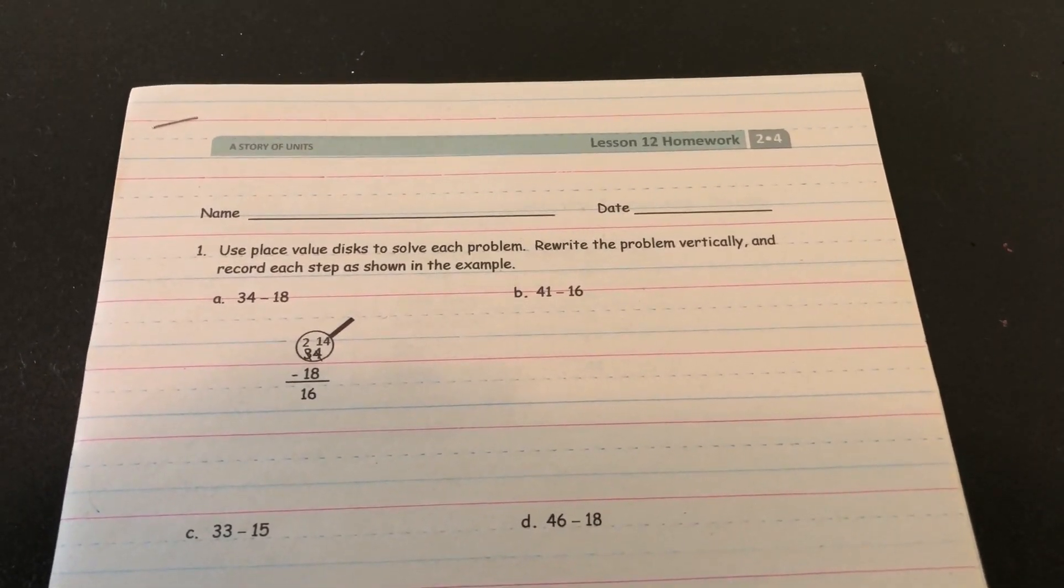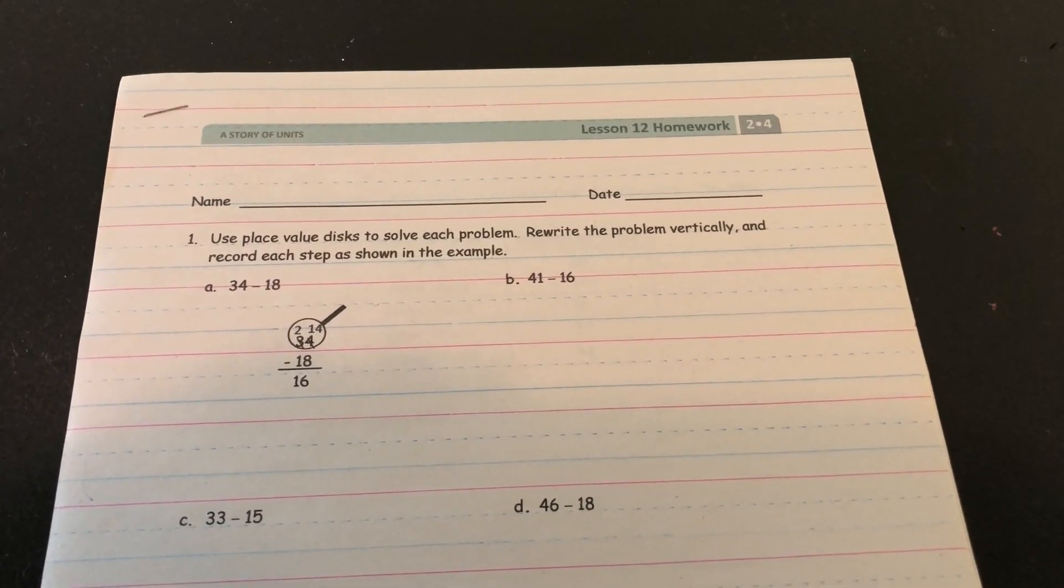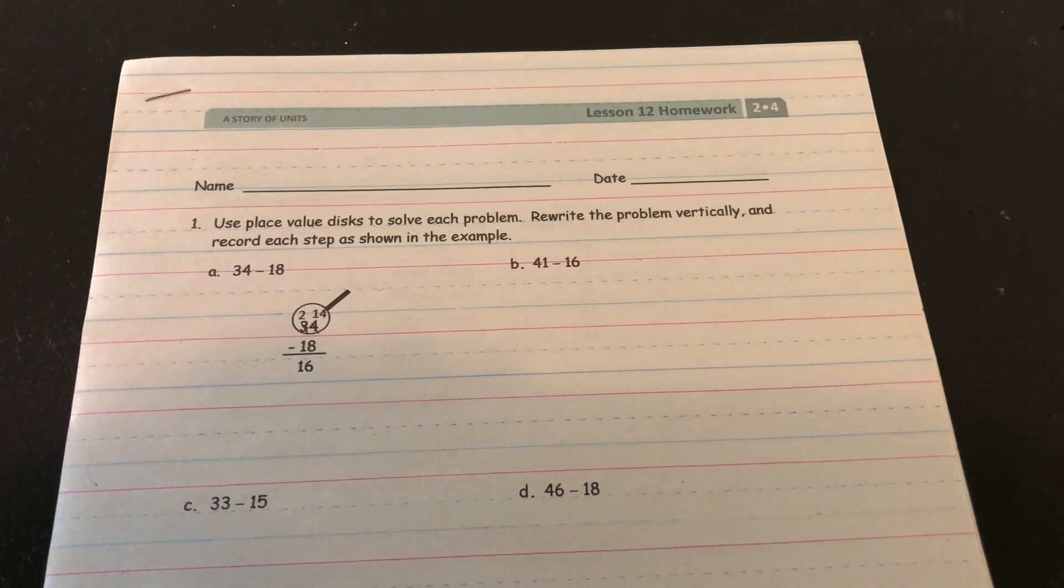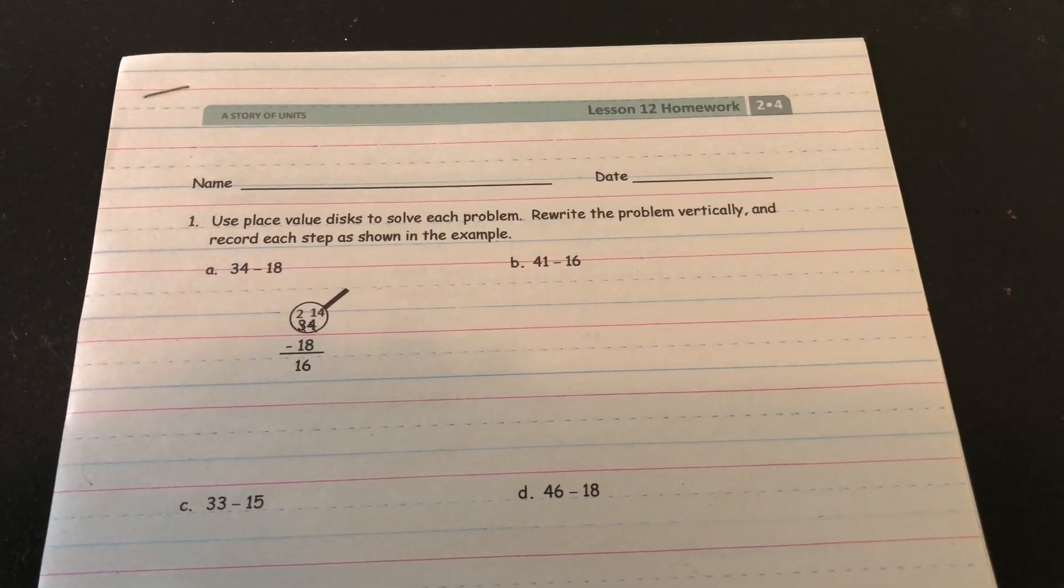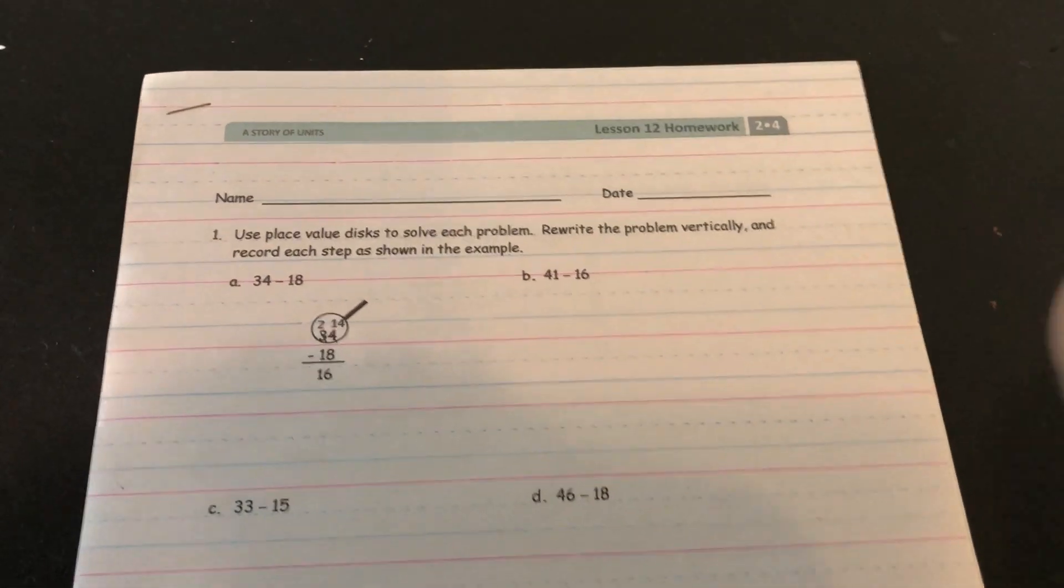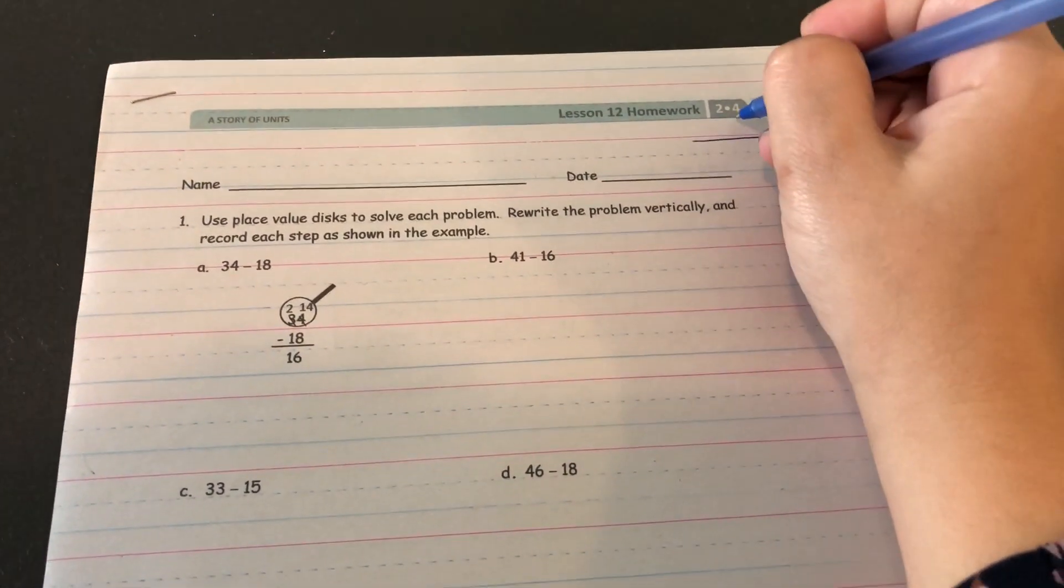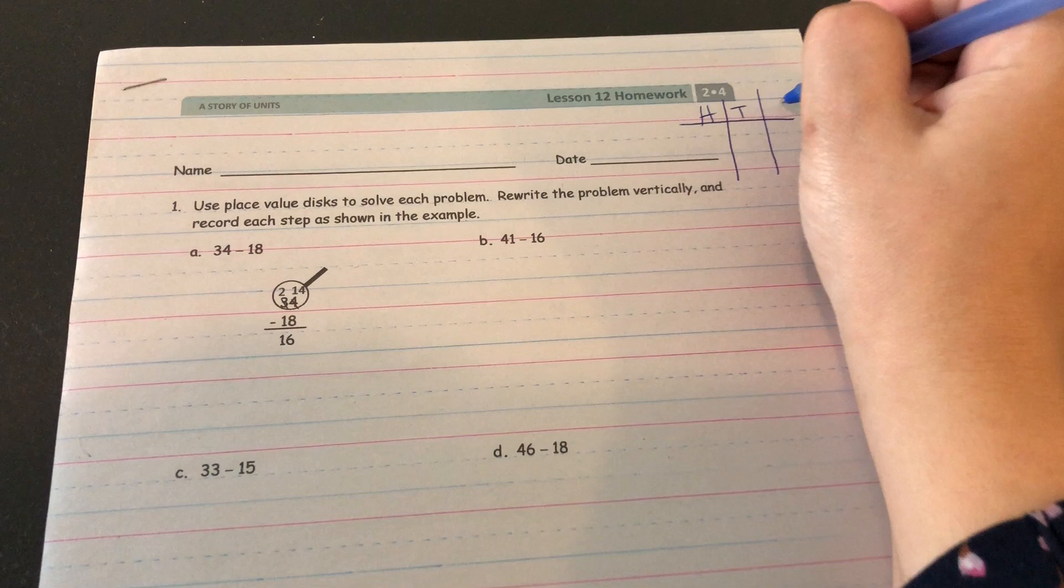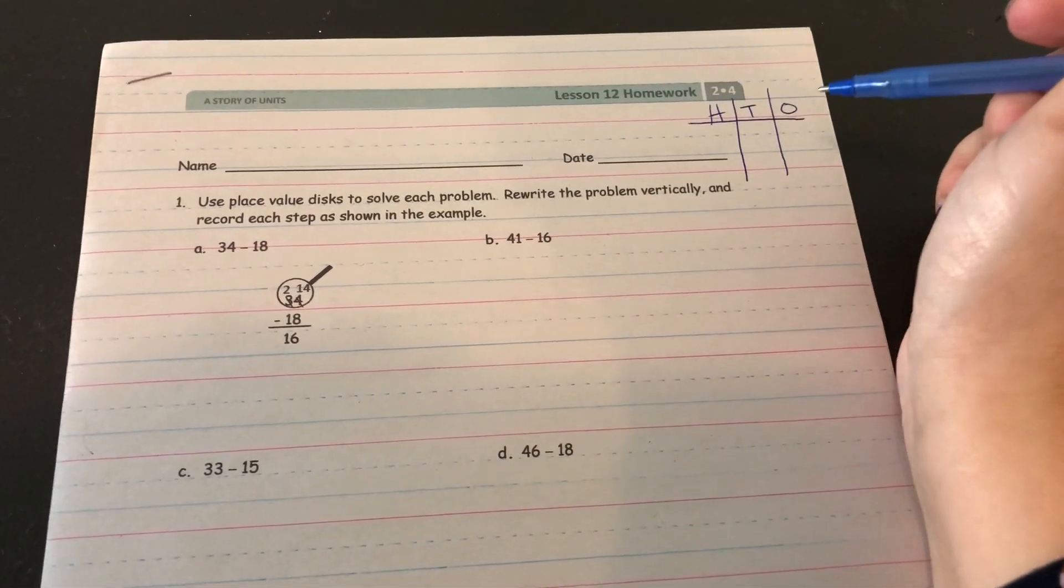So if you have your place value disks, you are more than welcome to use them to answer. If you don't have your place value disks, you could also draw a place value chart on your paper or on a piece of scrap paper to help you do these.